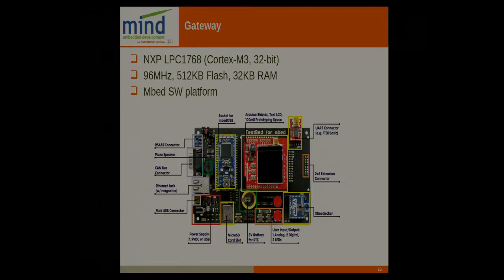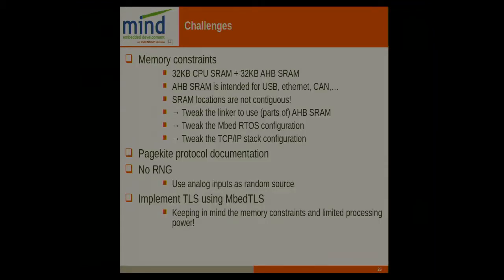We used the mbed development platform, and the gateway of our client was based on the NXP LPC1768, which is a Cortex-M3 32-bit microcontroller running at 96 MHz with only 64 kilobytes of RAM — though 32 kilobytes is reserved for the TCP/IP stack and functions like USB and CAN. So memory is actually quite a constraint. You can tweak the linker to use some parts of that reserved 32 kilobytes, which we will probably need to do in order to implement mbed TLS.